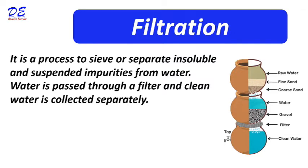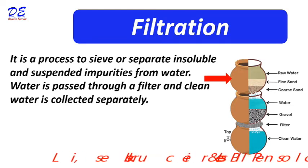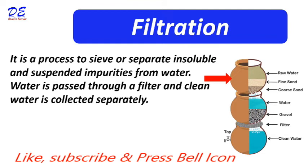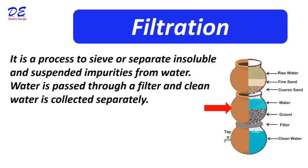You can see here three pots kept one above another. There are several holes on the bottom of the top and middle pots to pass the water. The top pot contains coarse sand, fine sand, and raw water. The middle pot contains gravels, and there is a filter between the middle and bottom pot. We collect the clean water into the bottom pot.